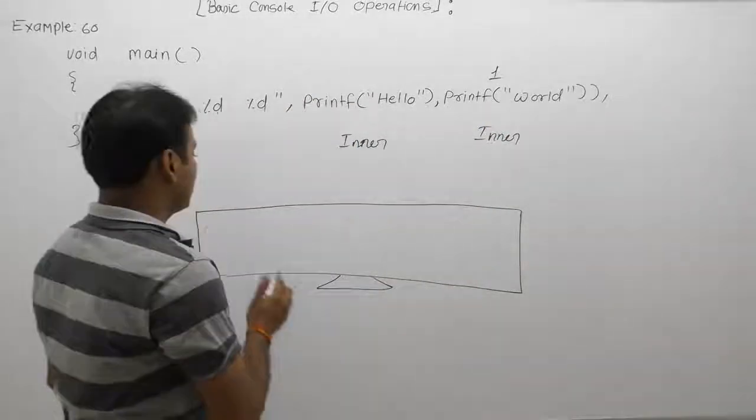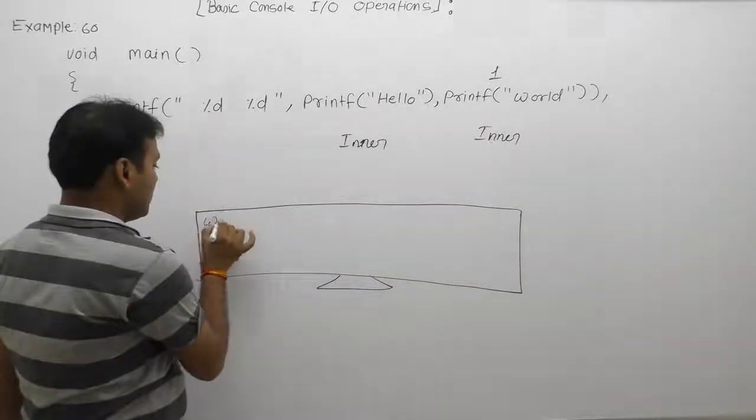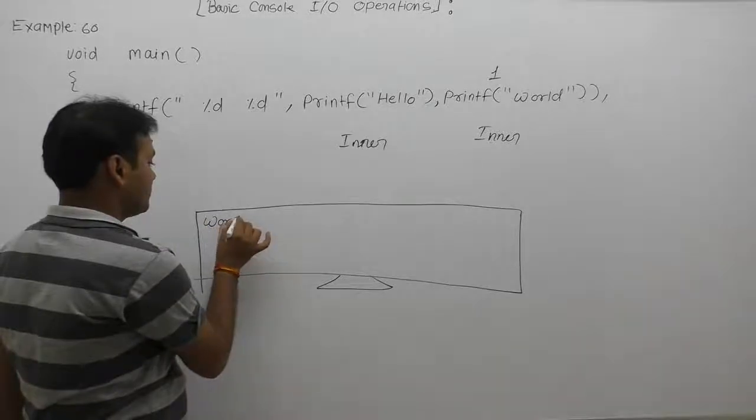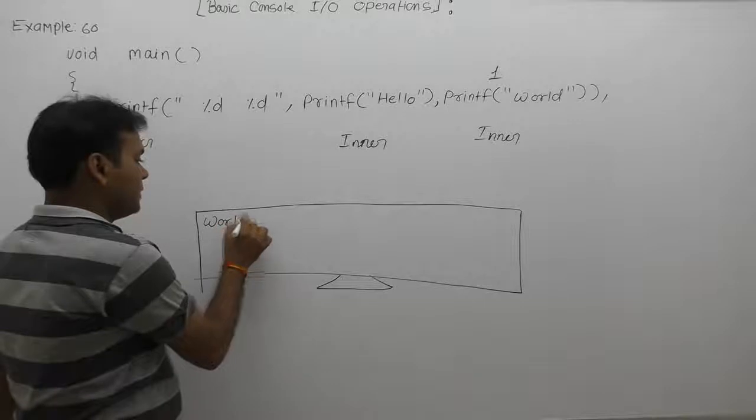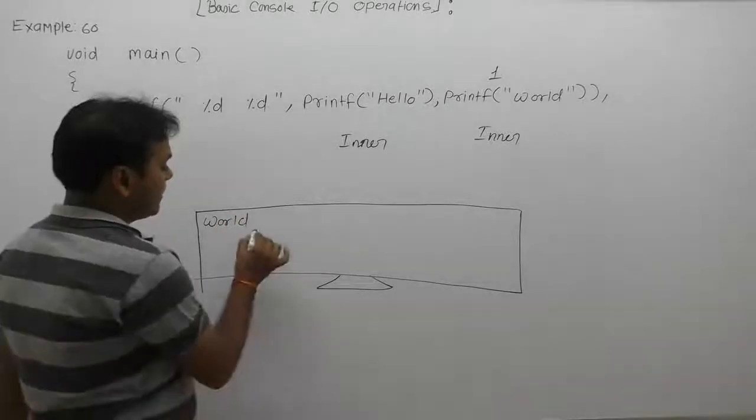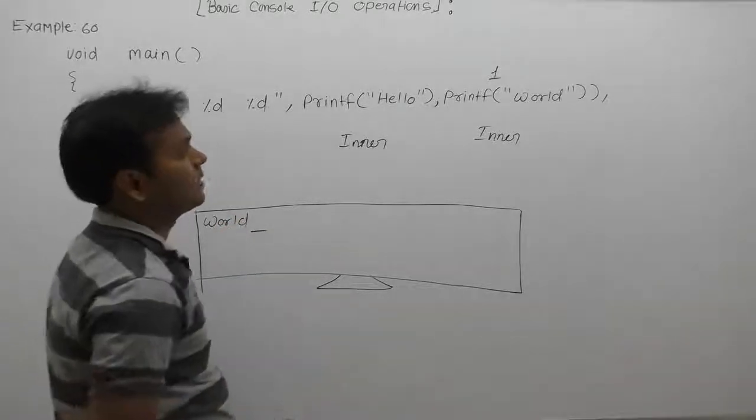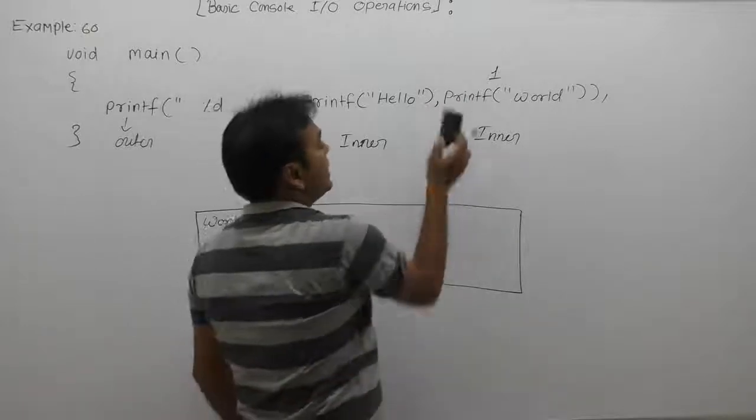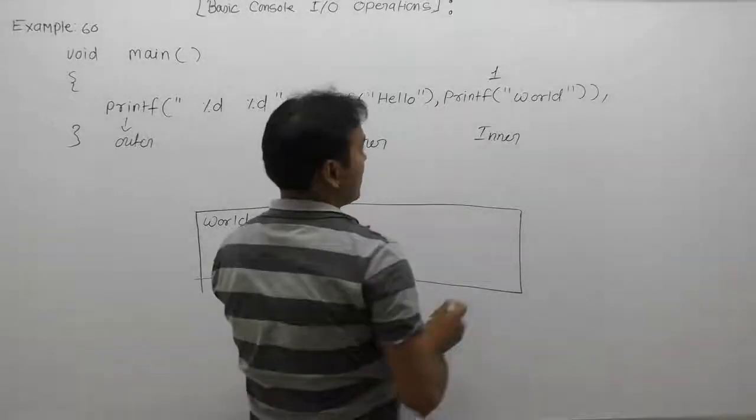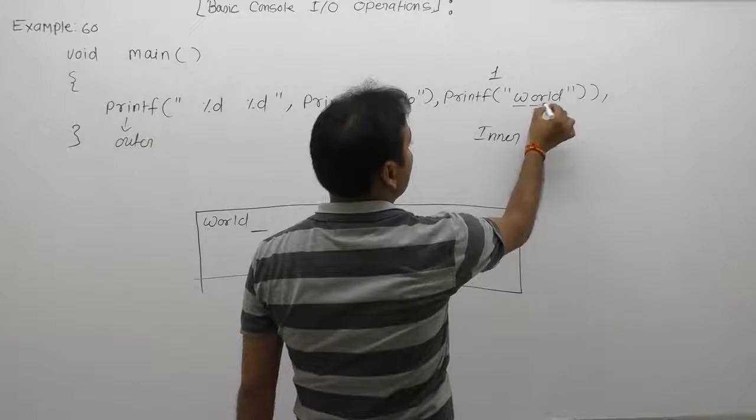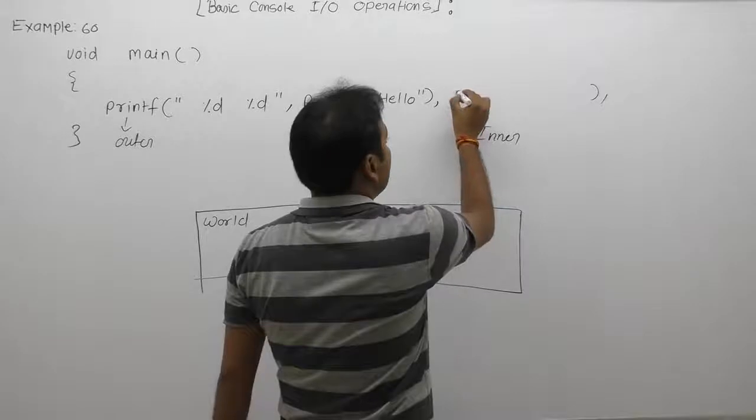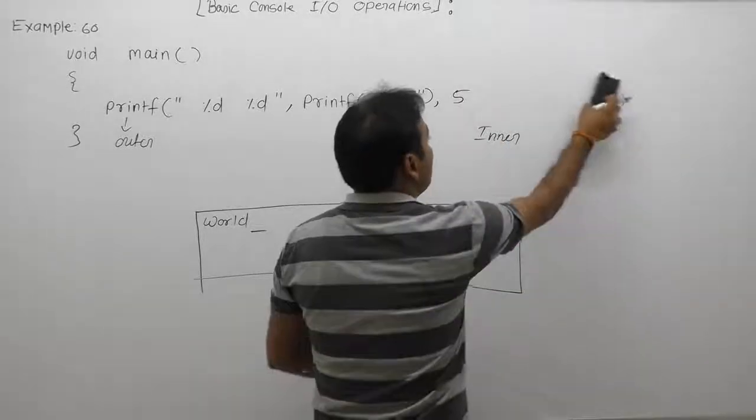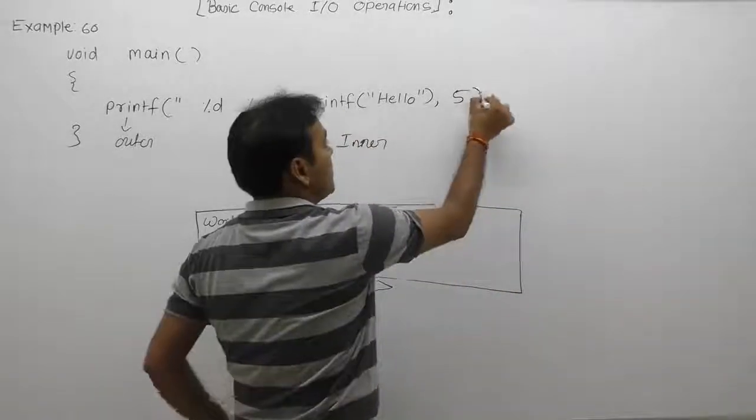In that case, printf function will display world. It will print on the monitor window given message as world. After that, cursor will be available on that position. Then finally, it will return number of printed characters. How many characters got printed? 1, 2, 3, 4, 5. Therefore, it will return value as 5. This is the return value of printf as 5.